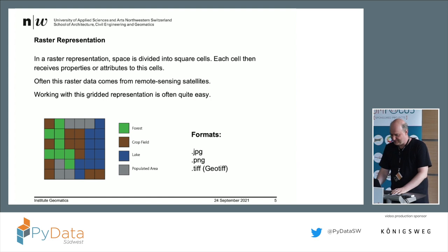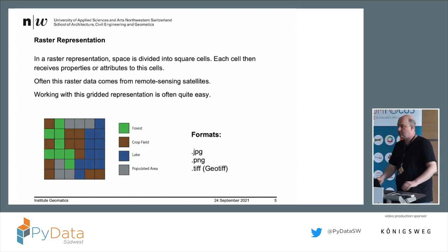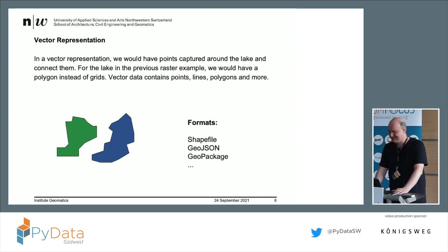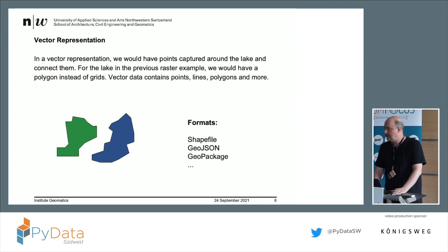If you look at the formats, you probably know JPEG, PNG, and TIFF. However, there is an additional component needed: the geospatial location information. There is a defined projection along with the data, so for every pixel you know the exact location. In TIFF, there is a header where all this information is stored. With JPEG and PNG, it's an additional file specifying that. Vector representations are much better if you want detailed lines, and there are some famous formats like shapefile, GeoJSON, or GeoPackage, and many more.